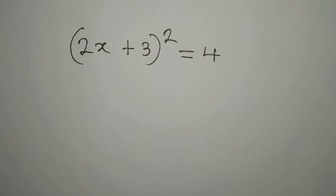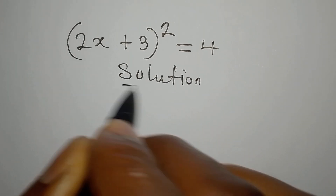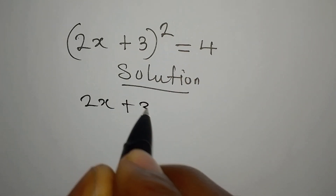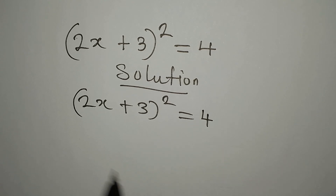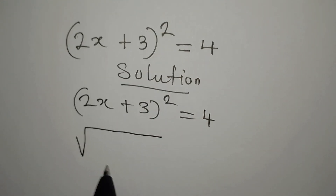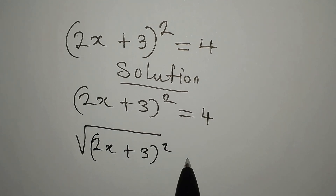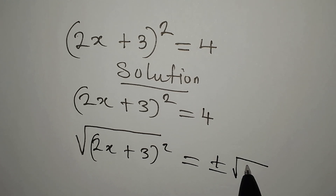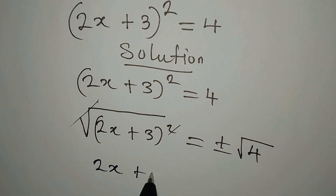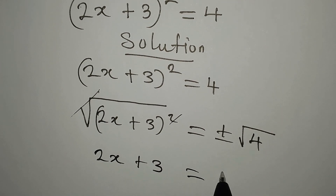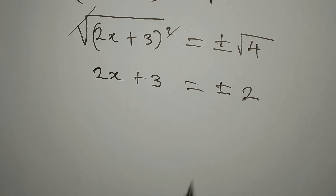Let's deal with this problem very quickly. We have (2x + 3) to the power of 2 equals 4. The only thing you need to do is find the square root of both sides: (2x + 3)² = ±√4. The squares cancel, leaving 2x + 3 equal to positive or negative square root of 4, which is ±2.